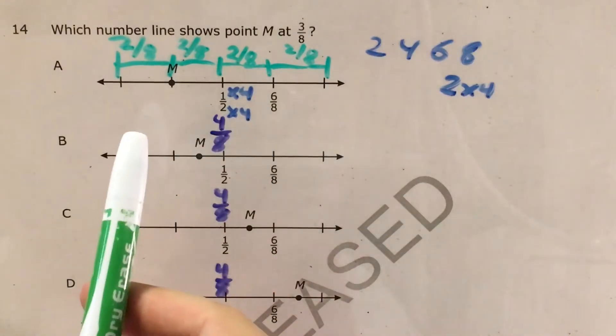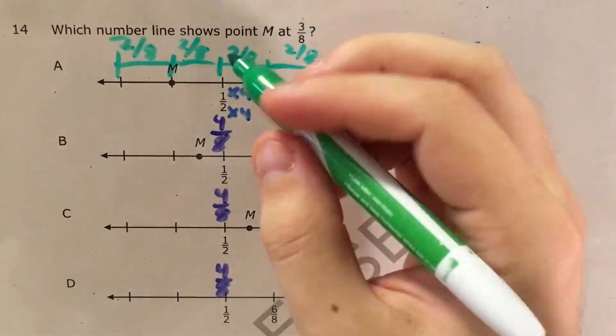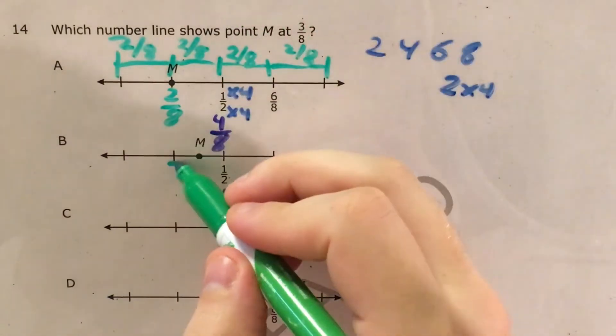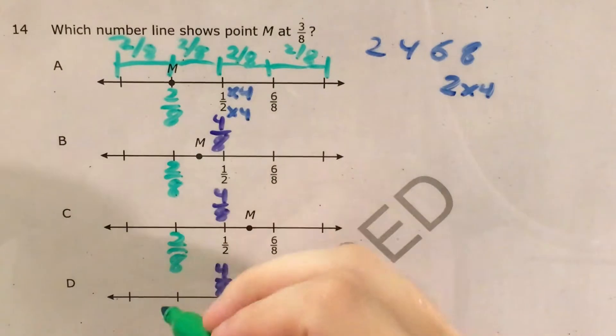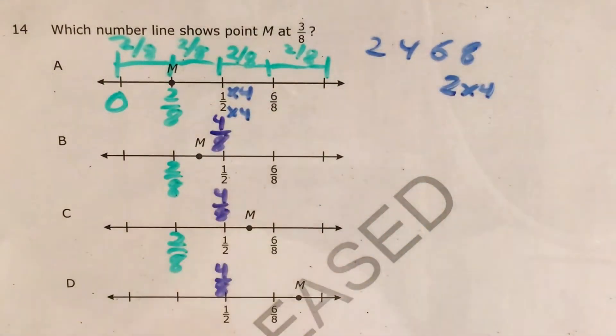So I can go ahead and fill in some of this information. For instance, going left from one-half or going left from four-eighths. Four-eighths minus two-eighths is just two-eighths. Two-eighths, two-eighths. Two-eighths minus two-eighths is just zero, or zero-eighths.